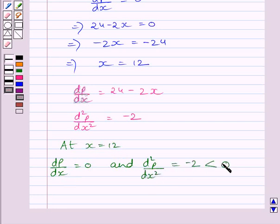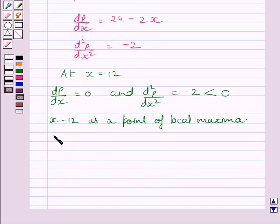Which is less than 0. So from the key idea, we get x = 12 is a point of local maxima, or we can say product p is maximum at x = 12.